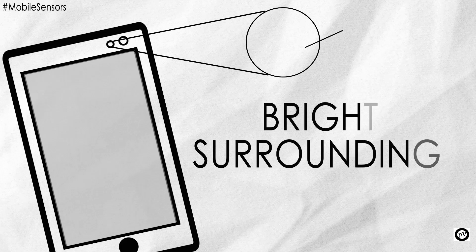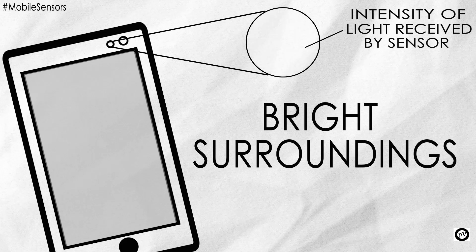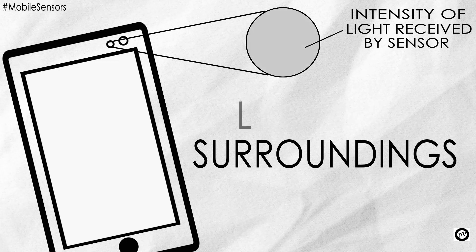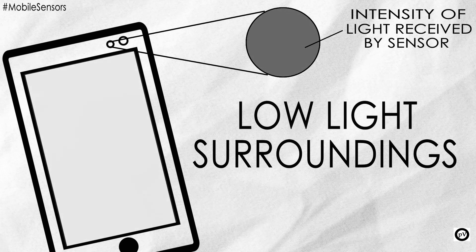In a bright surrounding, the intensity of light received by the light sensor will be high, and as a result the brightness of the screen will be increased. Similarly, in a low light environment, the brightness of the screen will be decreased.